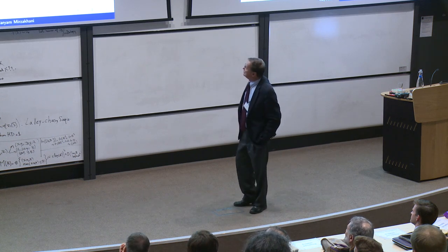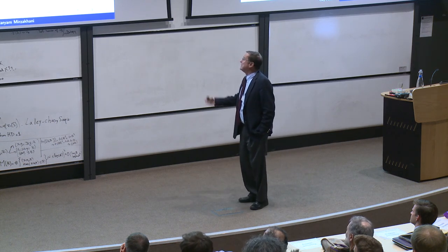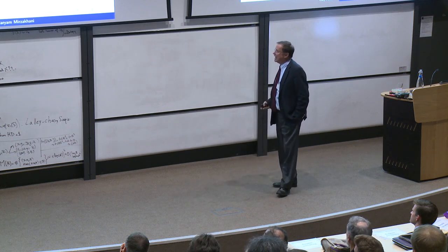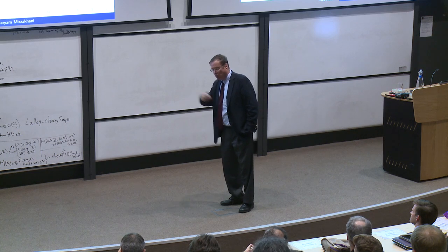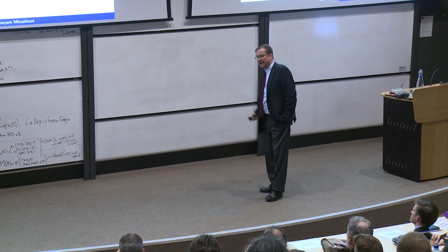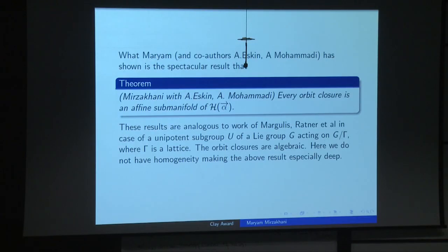One subgroup of SL(2,R) is the diagonal group; its action is called the Teichmüller geodesic flow. The orbit of a point can be exotic — it can be a Cantor set — reminiscent of geodesic flow on a surface of constant negative curvature. This brings me to the most recent theorem of Mirzakhani with co-authors Alex Eskin and Amir Mohammadi. What they have shown is that, without being completely specific, they've identified all orbit closures. Every orbit closure is an affine submanifold — there are no weird orbit closures in this moduli space.